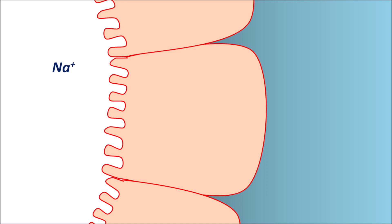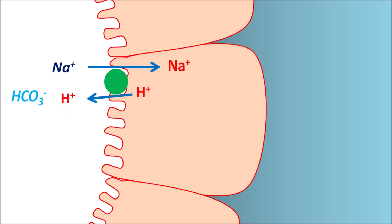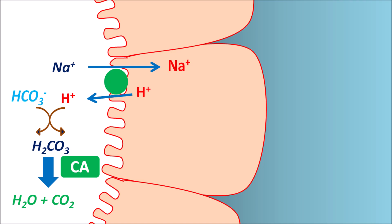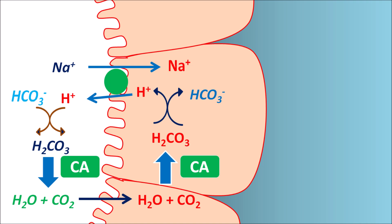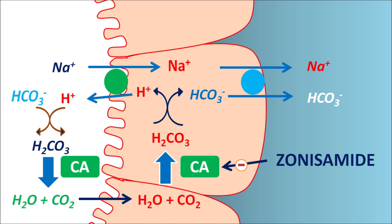Another important consideration is zonisamide's activity on the renal tubules. Within the proximal convoluted tubule, sodium as well as bicarbonate are reabsorbed. Sodium enters the renal tubular membrane in exchange for a proton, which combines with bicarbonate to produce carbonic acid. This carbonic acid is split into water and carbon dioxide by the enzyme carbonic anhydrase. The water and carbon dioxide travel through the membrane and are converted back into carbonic acid by the same enzyme, which is then split into proton and bicarbonate. In this way, sodium and bicarbonate are absorbed into the tubular membrane and then into the systemic circulation via the basolateral membrane. Zonisamide can inhibit carbonic anhydrase enzyme activity, resulting in decreased reabsorption of sodium as well as bicarbonate.